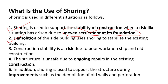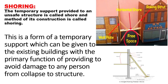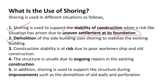The second reason for providing shoring is the demolition of an adjacent building. When a side building is being demolished, horizontal shoring is provided to stabilize the existing adjacent building and protect it from instability caused by the demolition activity.